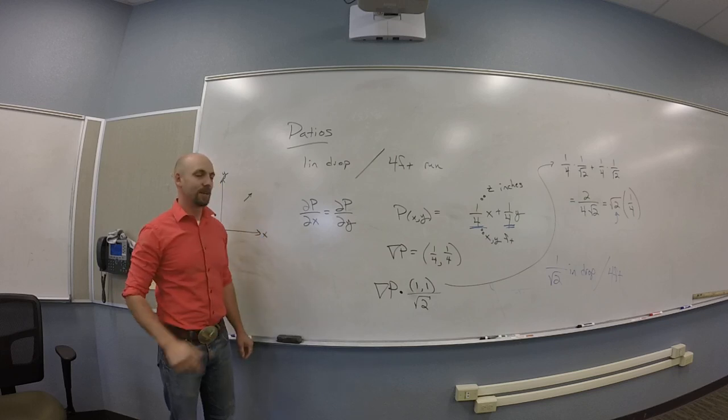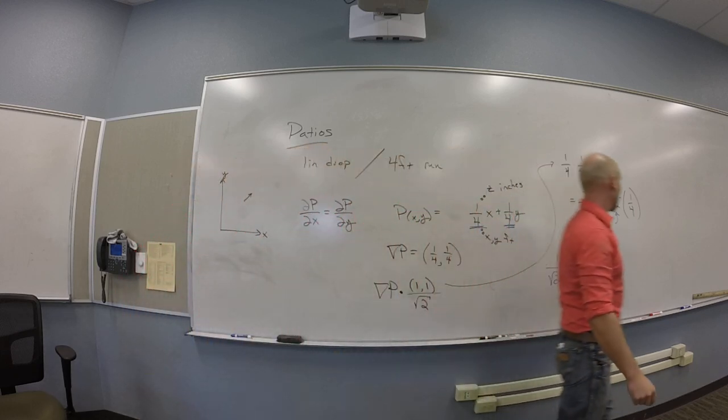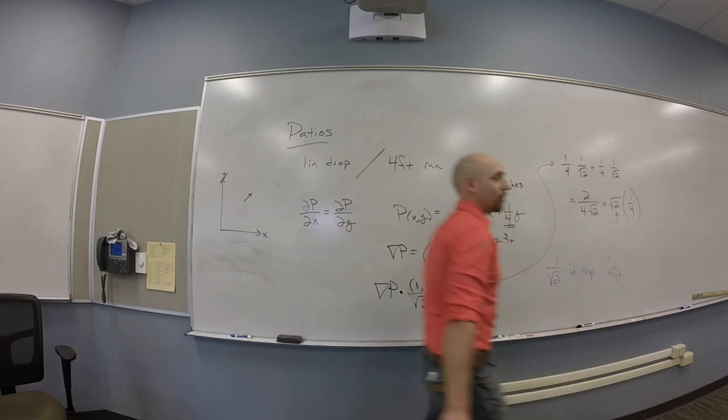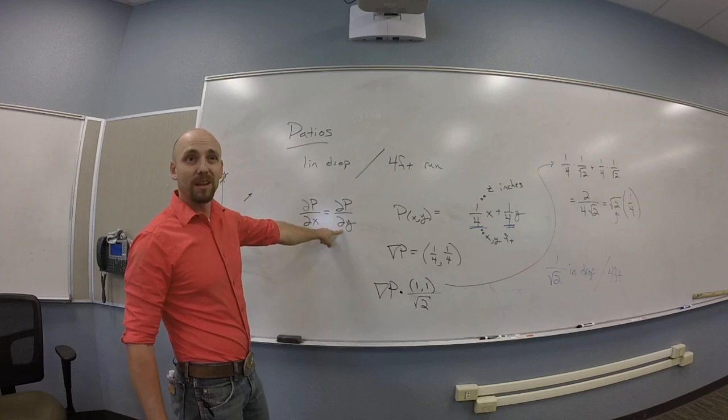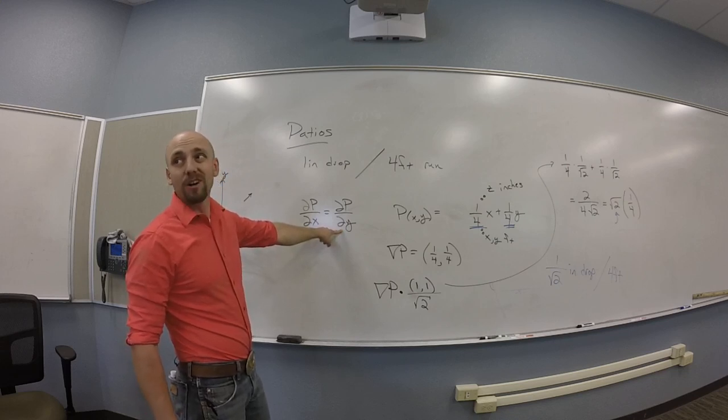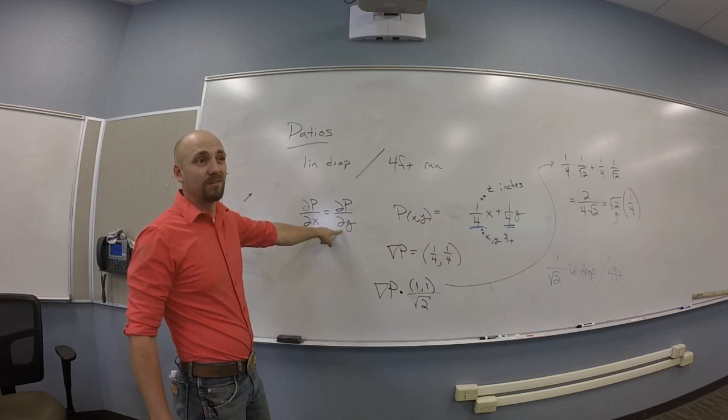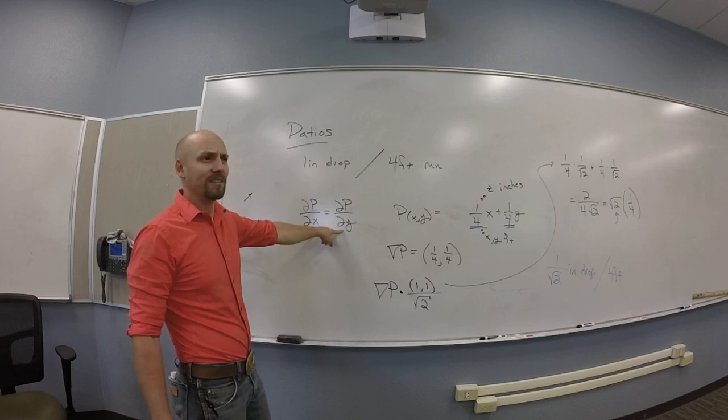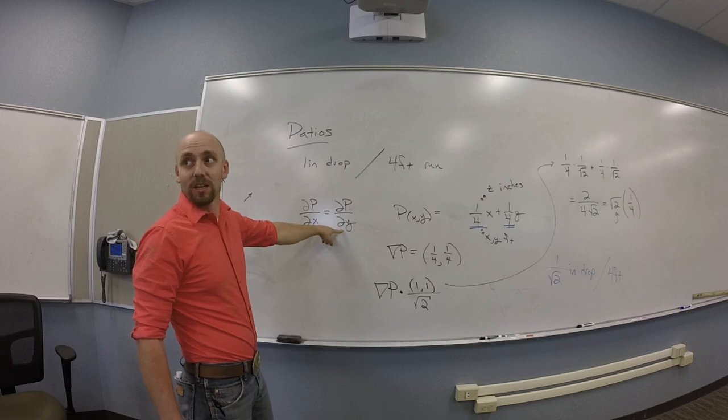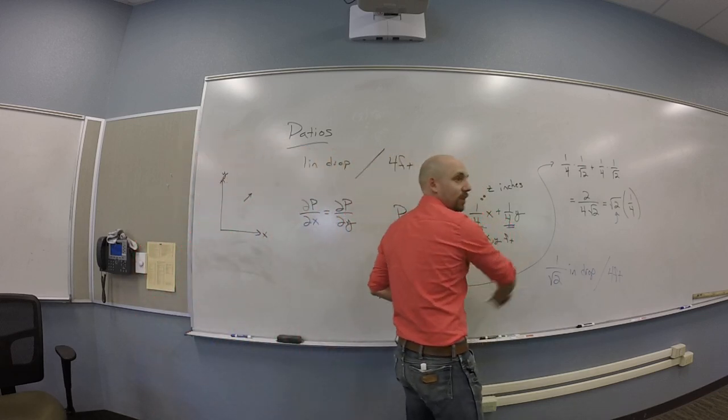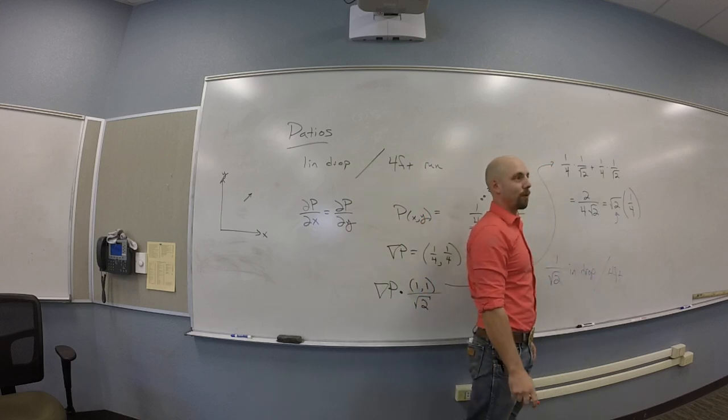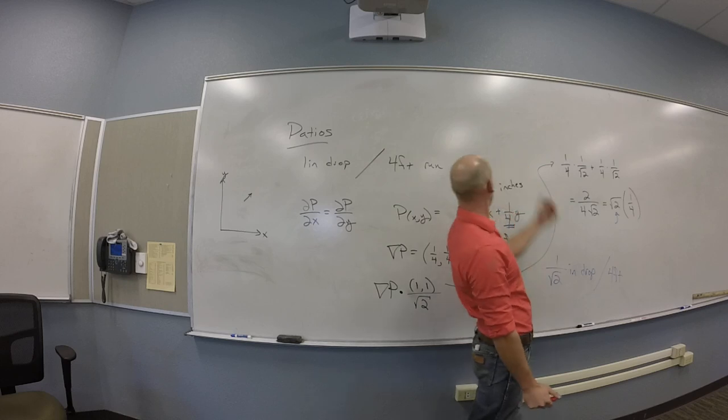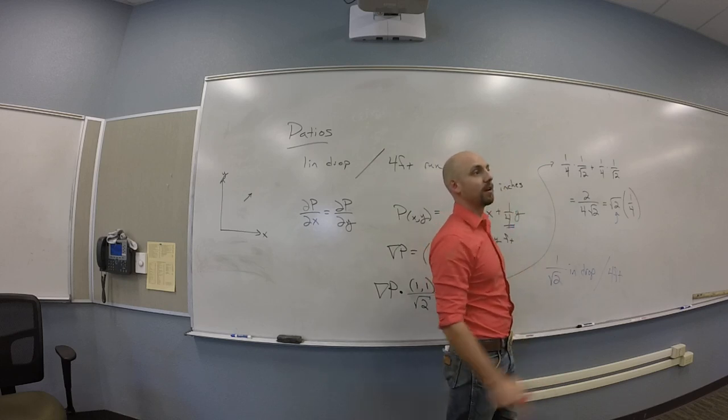This is kind of a pain in the ass to think through all of this. Maybe a different approach would have been to notice that if the X partial and the Y partial are the same and you don't know what they are, call them something. Like K or C. Probably C would be weird. Call them smiley face. Who gives a shit? Put those in here. Calculate the magnitude of the gradient vector and you'll find out that you need one quarter inch drop per four feet to get this to be that one inch per four feet.